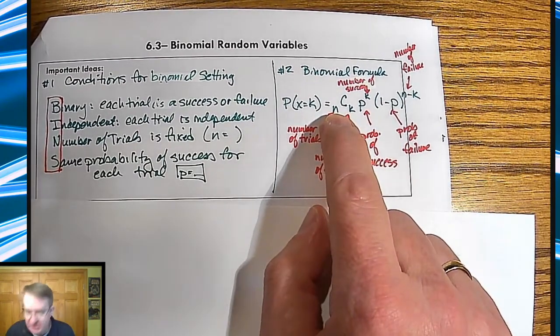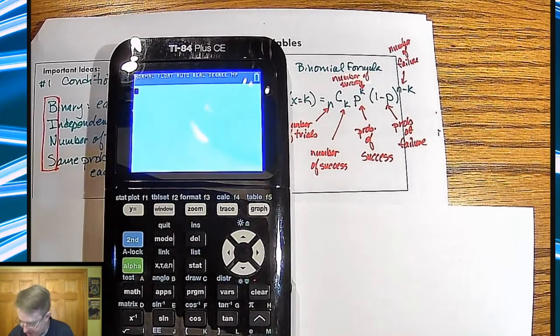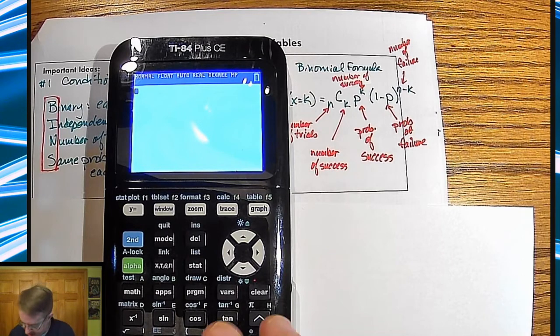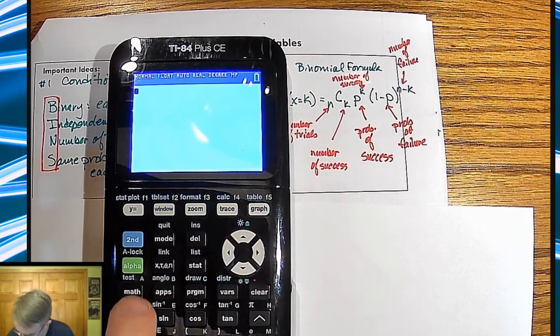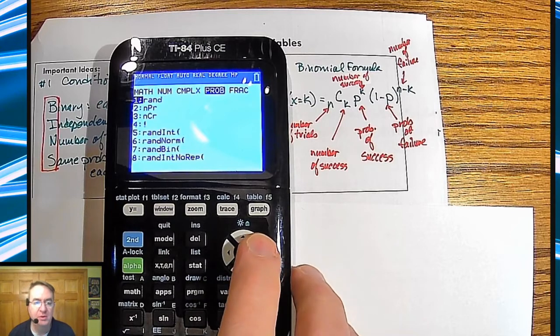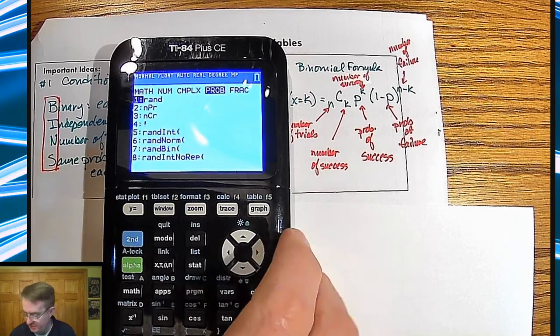And then here you've got N choose K, and that's an option on your calculator. It goes through and makes sure that order doesn't matter. It takes care of what we did on the previous page where we said, oh, that happens three times, we're going to multiply by three. You can find it underneath Math, and you go over here to the probability menu, and you'll see it right there, option number three. And we'll use that here down at the bottom of this example.